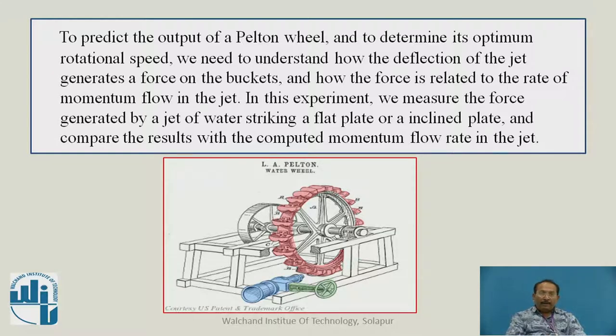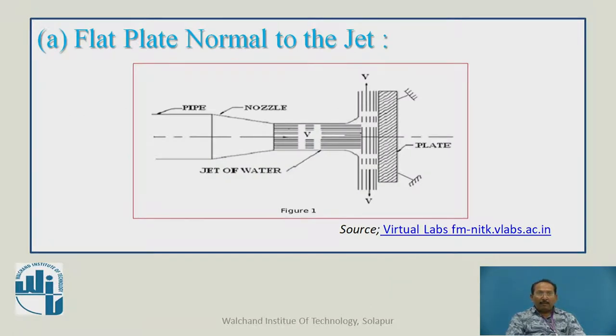First, we will discuss the flat plate normal to the jet. Here, a pipe has a nozzle fixed and from this nozzle, the jet of water strikes this normal plate. After striking, the water goes along this plate, normal to the plate with velocity V.